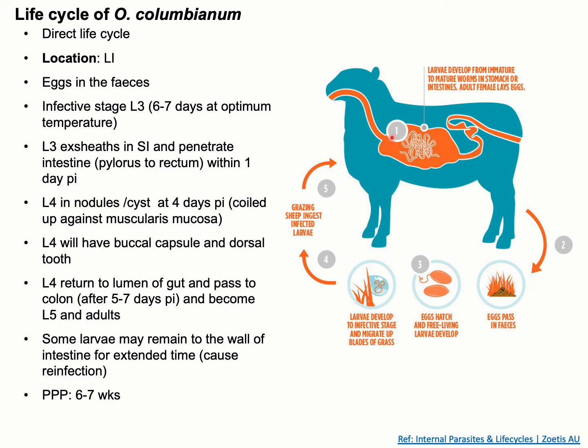Within these nodules, molting from L3 to L4 stage occurs. As the nodules are sometimes rupturing, the L4 stage larvae continue their migration throughout the intestinal wall and produce new nodules throughout the intestine. Meanwhile, some L4 stage larvae find their way to the lumen of the large intestine.